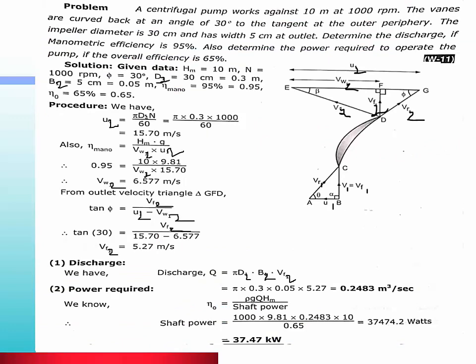A centrifugal pump works under a height of 10 meter at 1000 rpm. Vanes are curved back at an angle of 30 degrees at the tangent at the outer periphery, which means outlet. The impeller diameter is 30 cm and width is 5 cm at outlet, meaning D₂ is 30 cm and B₂ is 5 cm. Determine the discharge.